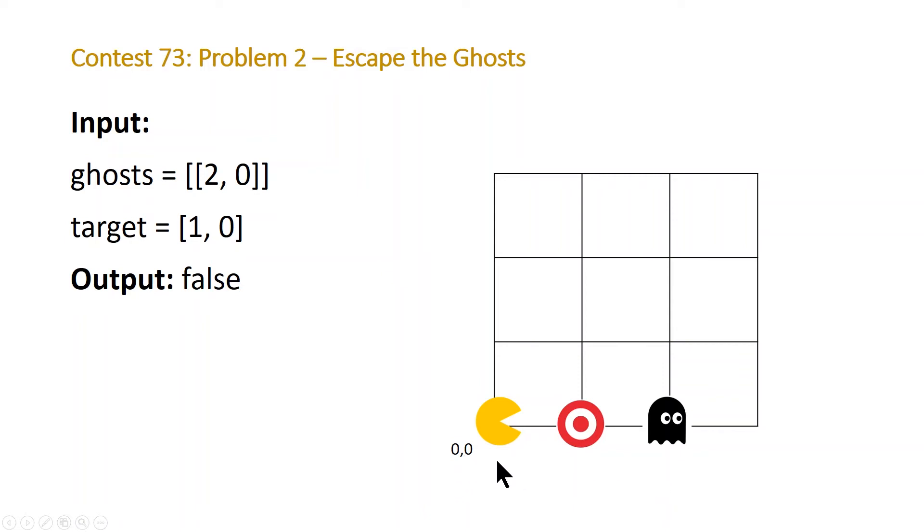And if the distance that it takes Pac-Man to get optimally, which is just going to be the vertical distance and the horizontal distance from the target, if it's less than the minimum distance of all your ghosts, then you know the Pac-Man is going to be able to get there in time. Otherwise, a ghost will be able to get to the target first. And in that case, it's not going to be an escape. So that's what informs our algorithm.